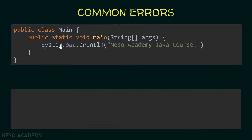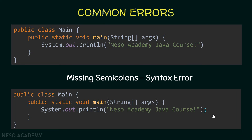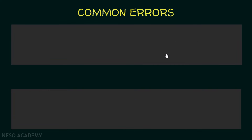Let's look at another example. See this code — pause the video and try to find the error. If you look carefully, we did not terminate the statement with a semicolon — semicolons are missing, and this is also a syntax error. The correct code adds the semicolons. Whenever you miss a semicolon, you will see a red underline inside the IDE indicating that a semicolon is missing.